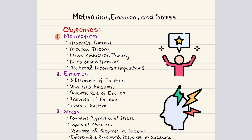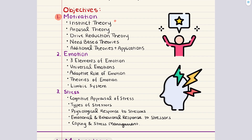In this chapter, we're going to cover three objectives. The first objective is about motivation, where we'll define motivation and cover instinct theory, arousal theory, drive reduction theory, and need-based theories. The second objective is titled Emotions, where we'll discuss the three elements of emotion, universal emotions, adaptive role, and theories of emotion, as well as the role of the limbic system in regulating emotion. For our third objective, we'll talk about stress, covering cognitive appraisal of stress, types of stressors, and physiological, emotional, and behavioral responses to stress.